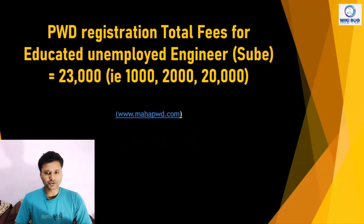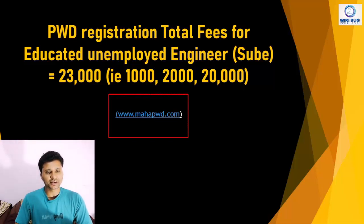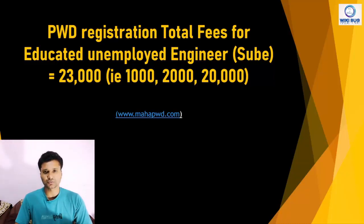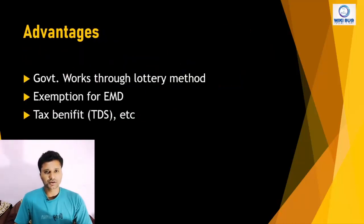PWD registration total fees for educated unemployed engineer: so many people don't know how much total expenditure the registration is. Total fees are 23,000 rupees. When you create an ID and password, at that time you have to submit 1,000 rupees online. After that you have to submit 2,000 rupees separately, and at the time of application you have to submit 20,000 rupees. That is a total of 23,000 rupees.